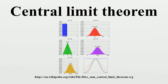Convergence to the limit: The central limit theorem gives only an asymptotic distribution as an approximation for a finite number of observations. It provides a reasonable approximation only when close to the peak of the normal distribution; it requires a very large number of observations to stretch into the tails. If the third central moment E[|x|³] exists and is finite, then the above convergence is uniform and the speed of convergence is at least on the order of 1/√n. Stein's method can be used not only to prove the central limit theorem, but also to provide bounds on the rates of convergence for selected metrics. The convergence to the normal distribution is monotonic, in the sense that the entropy of Zn increases monotonically to that of the normal distribution.